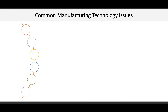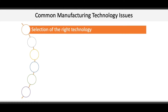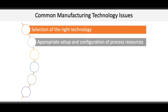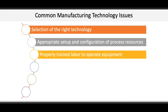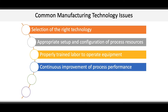Next, we learn about some technology issues commonly experienced by manufacturing firms. The first is the selection of the right technology — you don't use a hammer when you need a screwdriver. Second is the appropriate setup and configuration of process resources to help create a smooth flow through the operation. Third is properly trained labor to operate equipment safely and efficiently. Fourth is the continuous improvement of process performance to constantly find efficiencies and to eliminate waste.